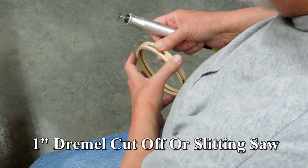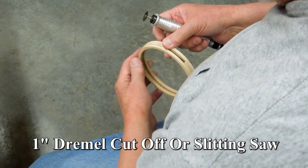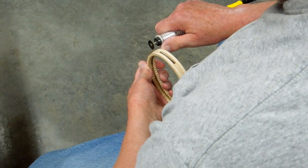One advantage of using this Dremel slitting saw in the Fordham tool is you can really slow it down, a lot easier to control.